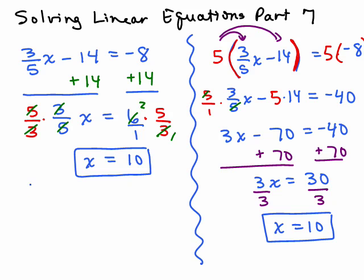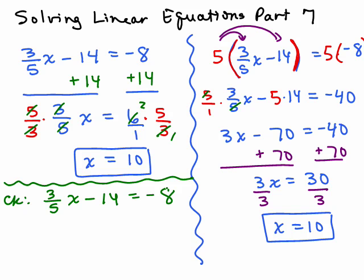Let's go ahead and check the problem over here on the left. So we're going to check, so we write out the original problem. Make sure that when you check a problem, you always write down the original problem, not some intermediate step like 3x minus 70 equals negative 40. Now let's put in 10 for x, so we have 3 fifths times 10. So I'm going to write that as 10 over 1 minus 14, and if I cancel, the 5 goes into the 10 twice, so that gives me 6 minus 14.